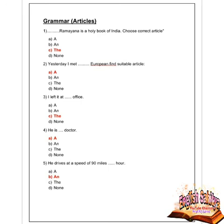After the prose and poetry sections, we move to the grammar section. First — Articles. First question: dash dash Ramayana is the holy book of India — choose the correct article. Given options are a, an, and the. Option C is correct — the. The Ramayana is the holy book of India.